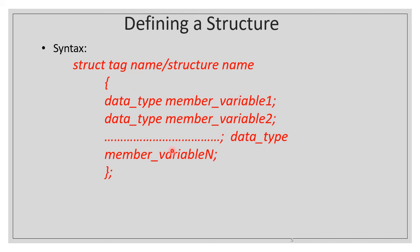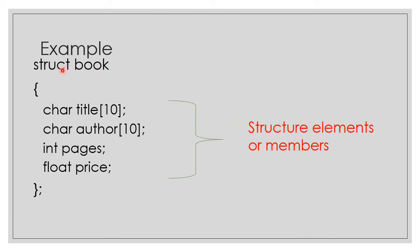To define a structure, each variable has one data type. All variables share a single tag name — a single structure name. For example, here we are declaring a structure book. The keyword struct is used, book is the name given to the structure, curly brackets contain the members: title as a character array, author as a character array, pages as integer, and price as a floating point data type. These are the members of the structure.